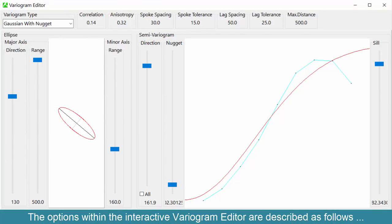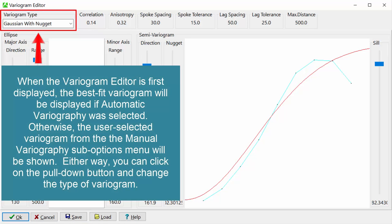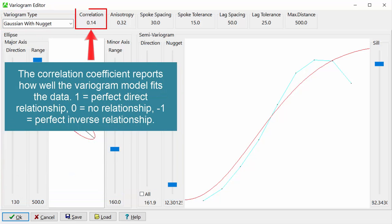The options within the interactive variogram editor are described as follows. When the variogram editor is first displayed, the best fit variogram will be displayed if automatic variography was selected. Otherwise, the user selected variogram from the manual variography sub options menu will be shown. Either way, you can click on the pull down button and change the type of variogram. The correlation coefficient reports how well the variogram model fits the data.